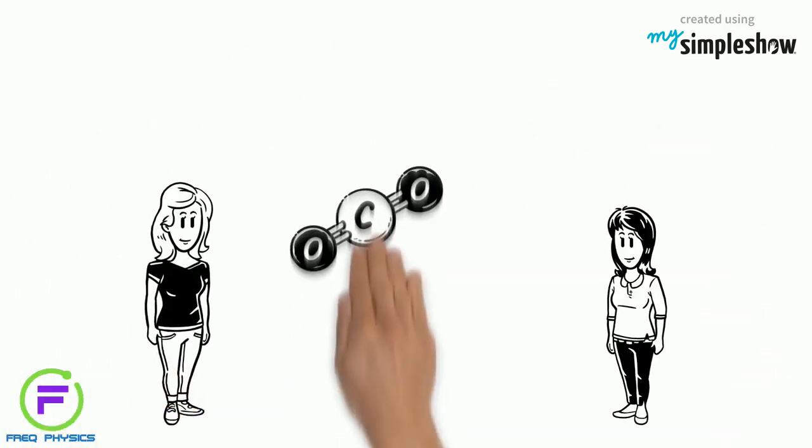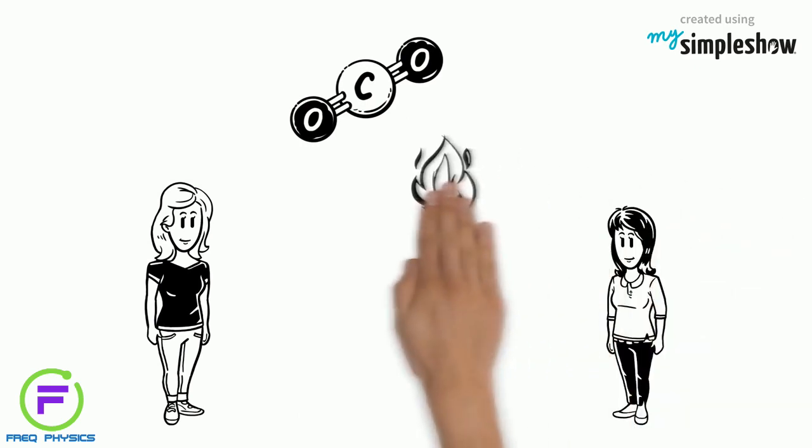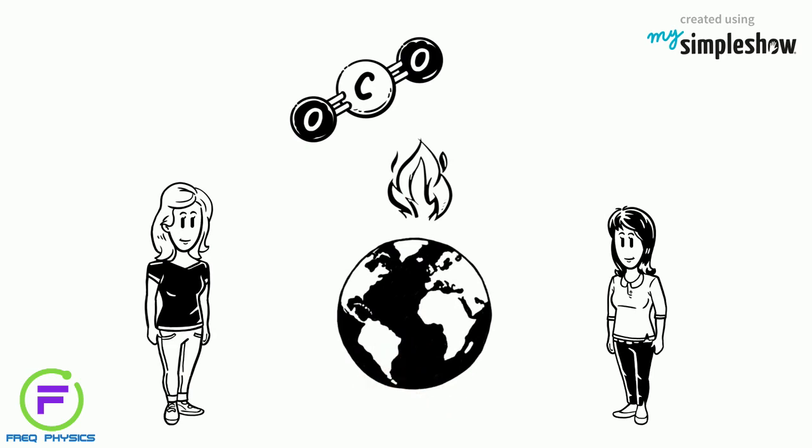Liz asks Sylvia what greenhouse gases are. Sylvia tells her that greenhouse gases are compounds that trap heat in the Earth's atmosphere, keeping the planet's surface warmer than it would be without them.